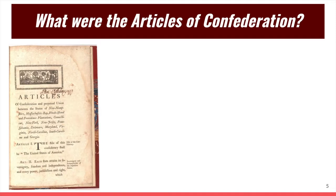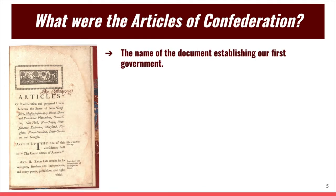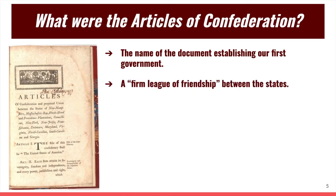So we invented a system of government called the Articles of Confederation. Most Americans do not know this, but the Articles of Confederation were the title of the first government of the United States. Our left-side question is: what were the Articles of Confederation? Quite simply, the Articles of Confederation were the name of the document that created our first government in the United States. It didn't last for very long, and most Americans don't know about it, but knowing about the Articles of Confederation is important if you want to understand the history of our country. The Articles basically created — and this is a quote from the document — 'a firm league of friendship between the states.'